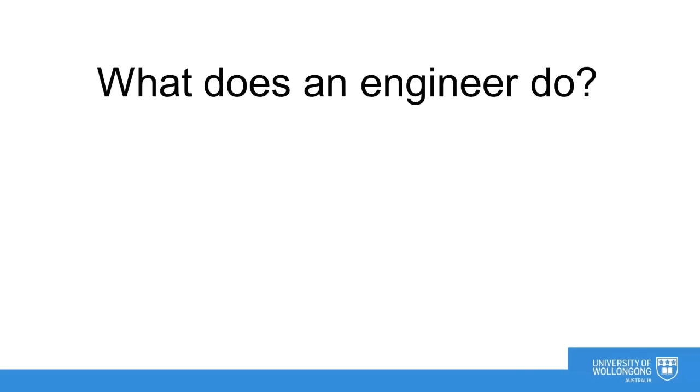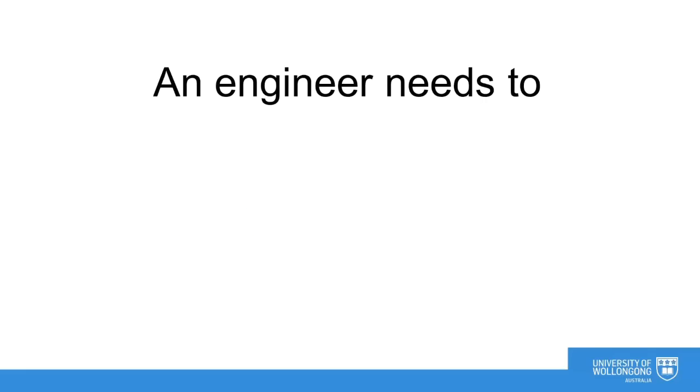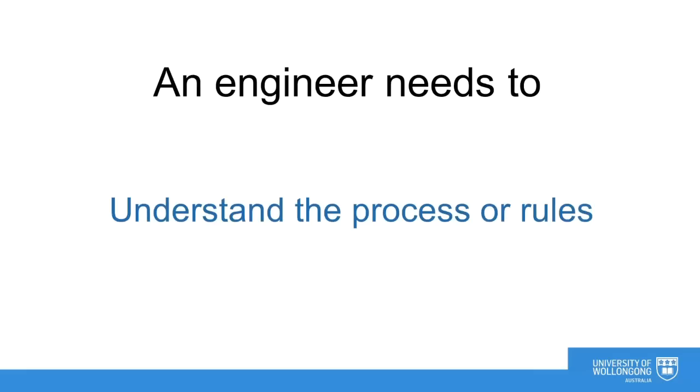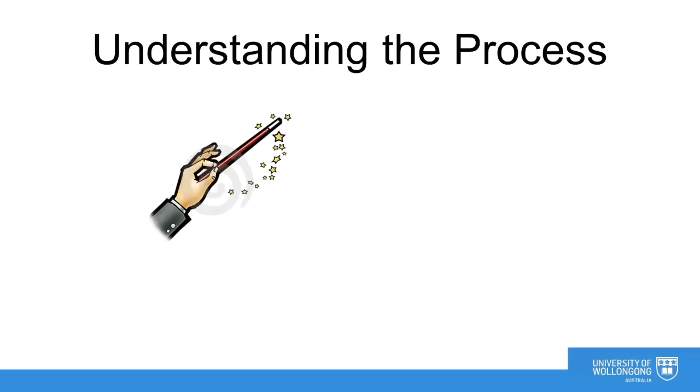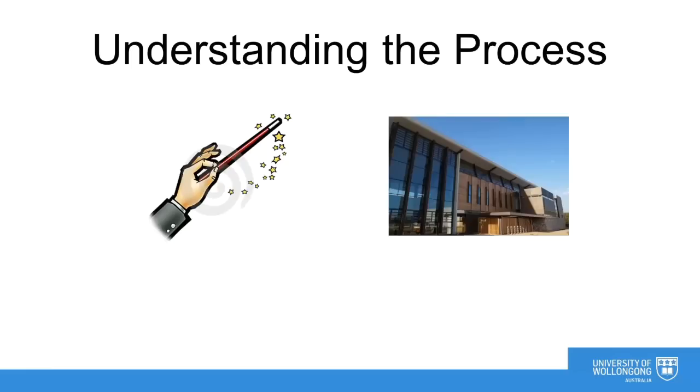Typical words that describe what an engineer does is design and build. However, to design and build anything an engineer needs to understand the process or rules. For example, a civil engineer does not simply wave a magic wand and a building is automatically built.